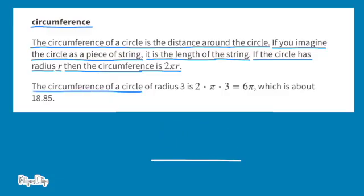The circumference of a circle of radius 3 is 2 times pi times 3 equals 6 times pi, which is about 18.85.